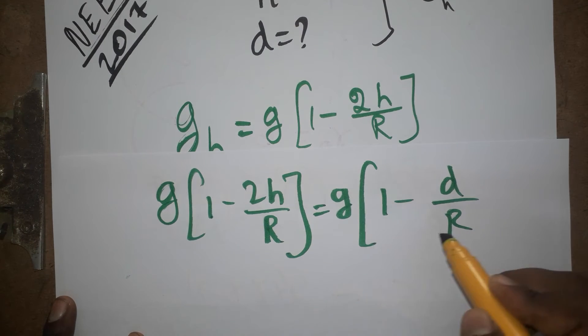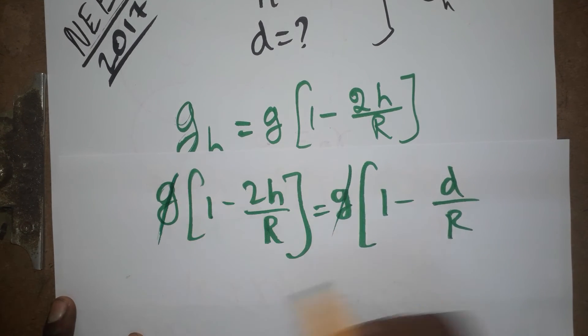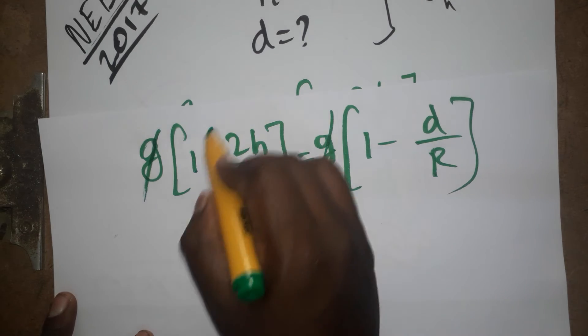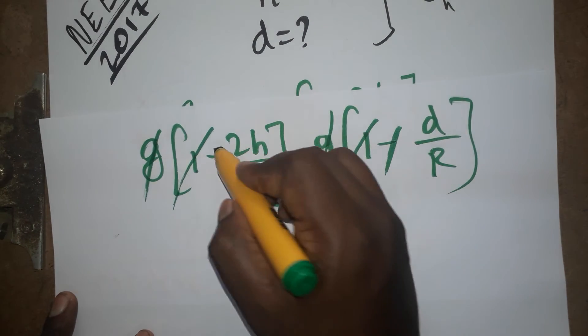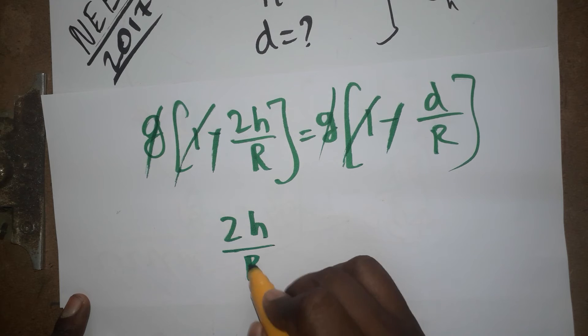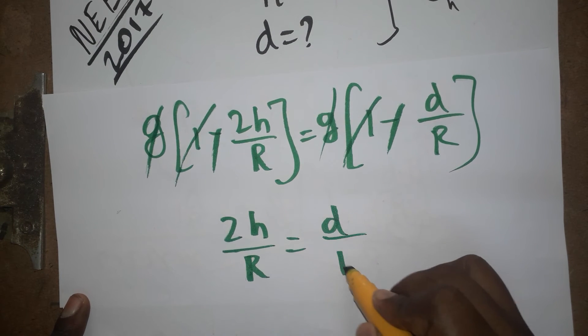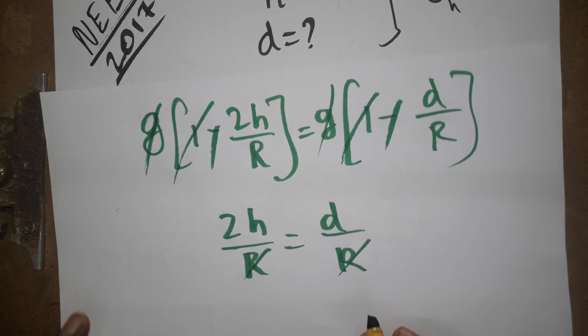H is the height, R is the radius of the earth, g is acceleration due to gravity. So our common term gets cancelled, 1 also gets cancelled, minus also will get cancelled. 2H divided by R equals D divided by R. This gets cancelled.